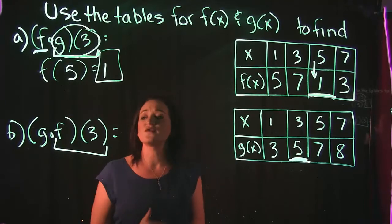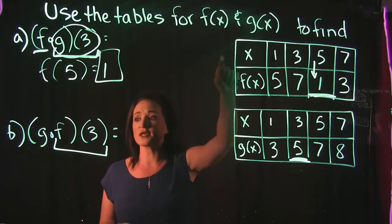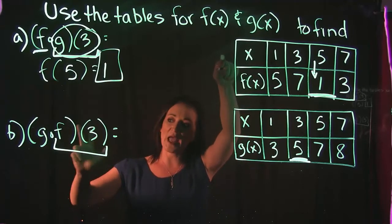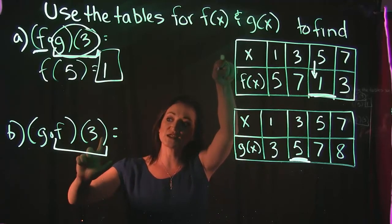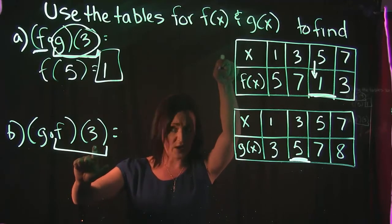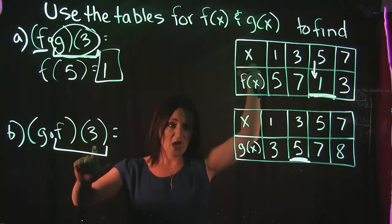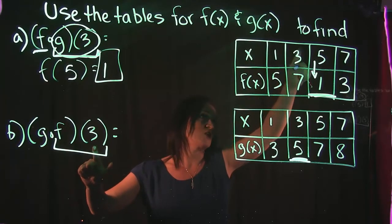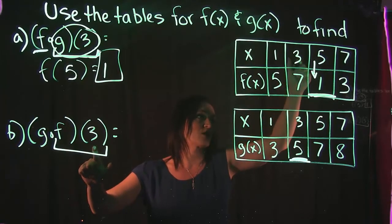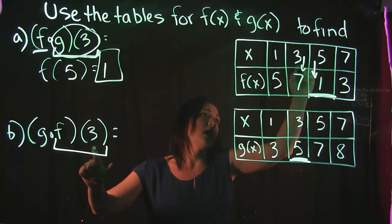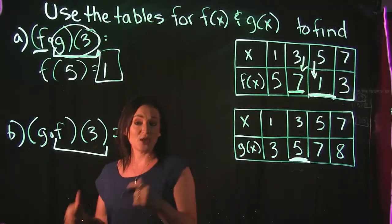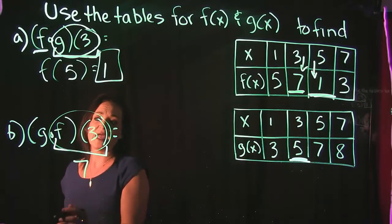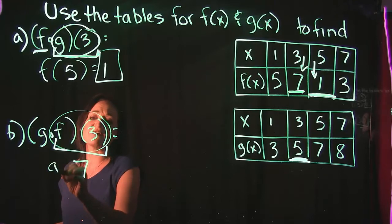So f of 3: our f function is the top table. This is telling us when x is 3 for f of x, what is y? The x value of 3 is right there, and when x is 3, my y value is 7. So f of 3 equals 7.